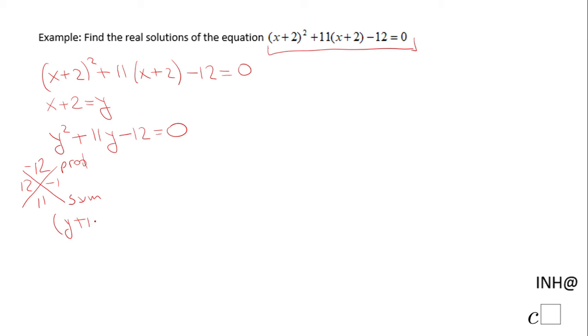Using the zero product property, y + 12 = 0 which gives us y = -12, and y - 1 = 0 which gives us the solution y = 1.